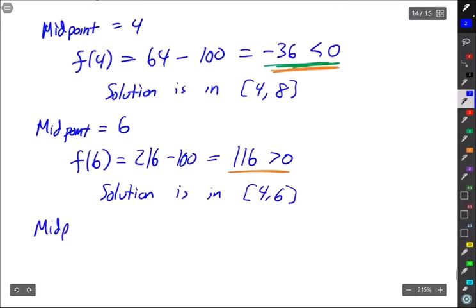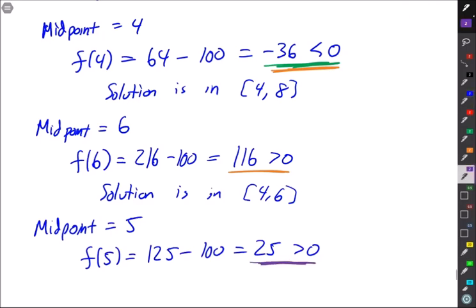We can do this one more time. We can do it more times but I'm doing one more here. The midpoint of this one is 5. f(5) is 125 - 100 is 25 which is positive. So now I want to pair this with this to give me that my solution is in the interval from [4,5].